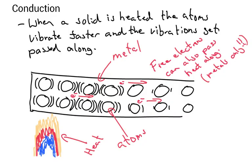So starting off with conduction. When a solid is heated, the atoms vibrate faster and the vibrations get passed along. So atoms in a solid they'll be just vibrating. When you heat them up, they start to vibrate more. And they'll bump into their neighbours and that vibration gets passed along the solid. So this is how heat travels through a solid.